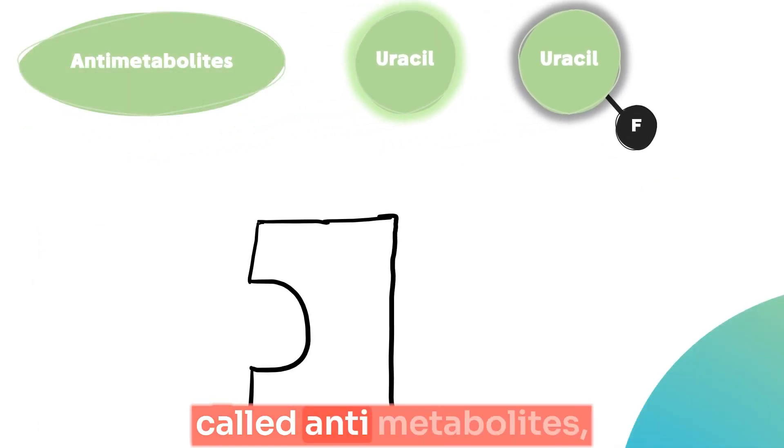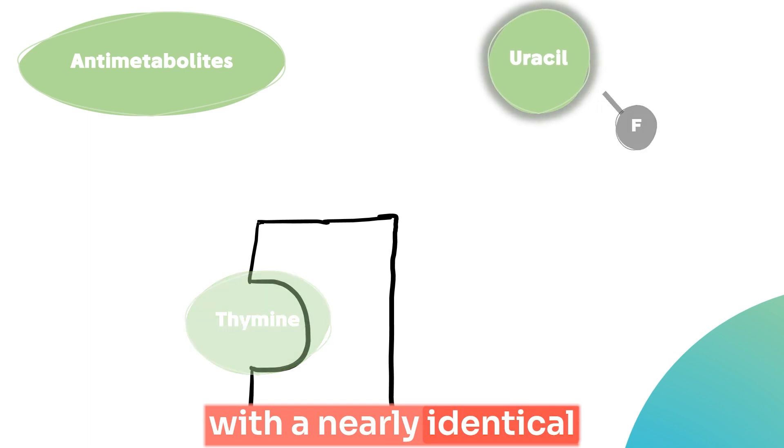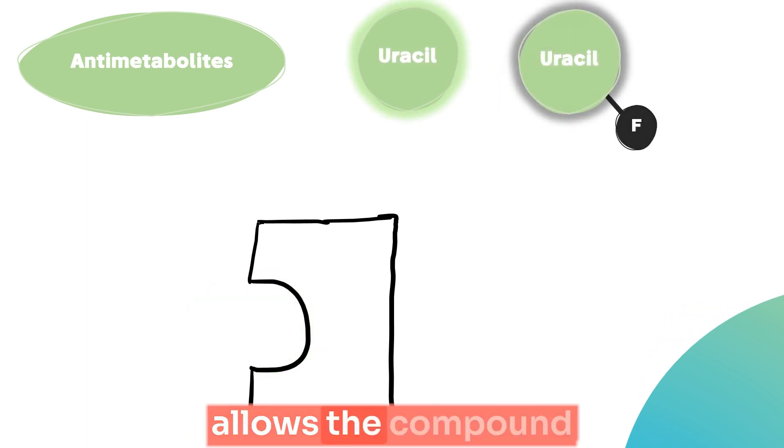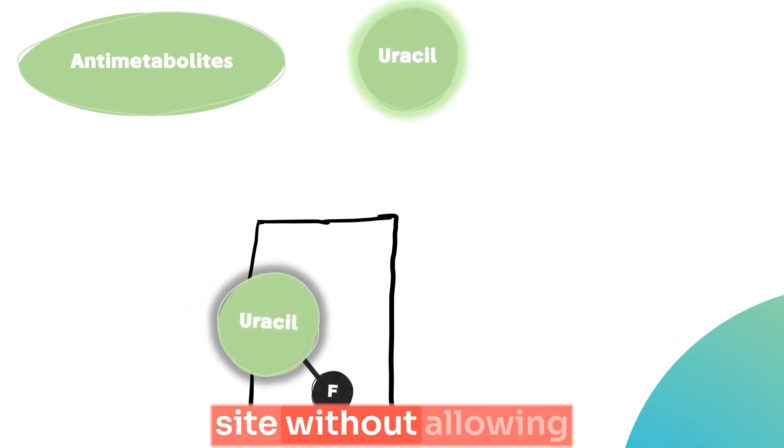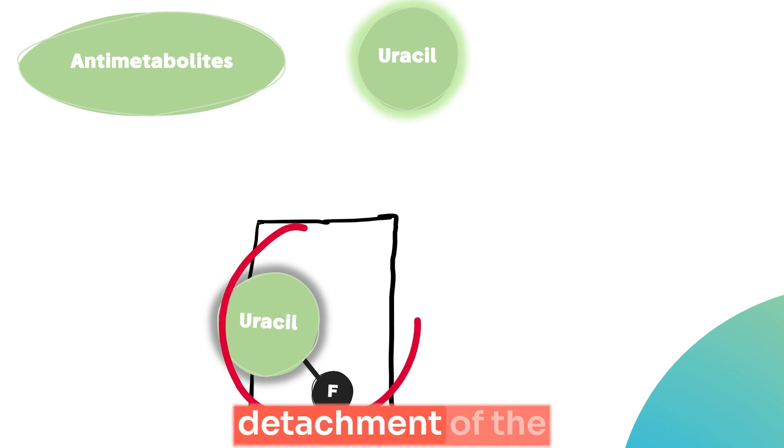These compounds are called anti-metabolites and from their name, they are compounds that oppose the metabolic actions with a nearly identical chemical structure that allows the compound to enter the active site without allowing neither the metabolic action nor the detachment of the compound from the active site.